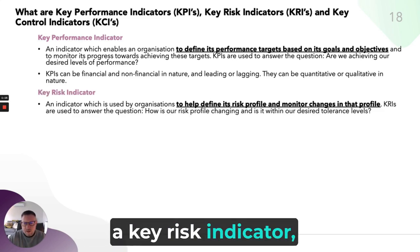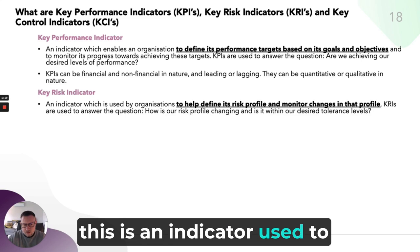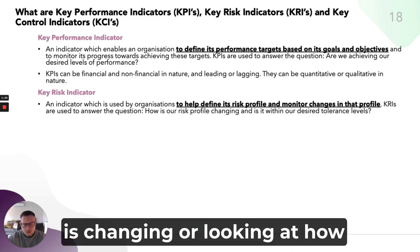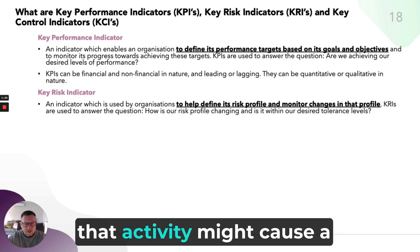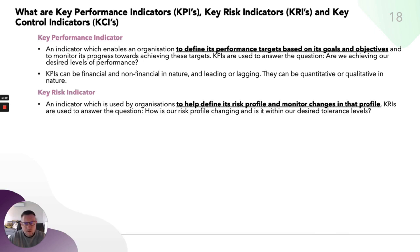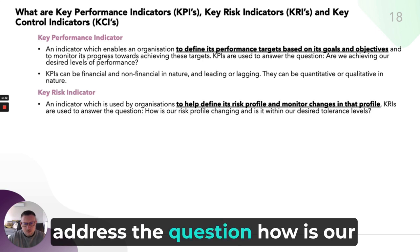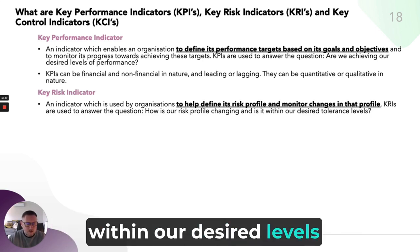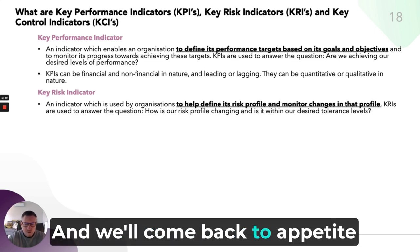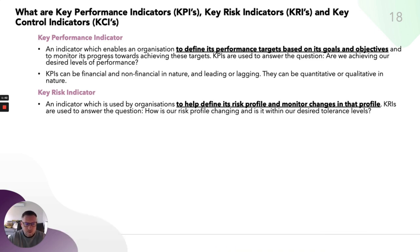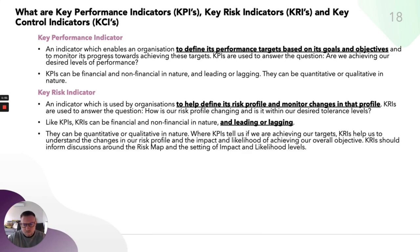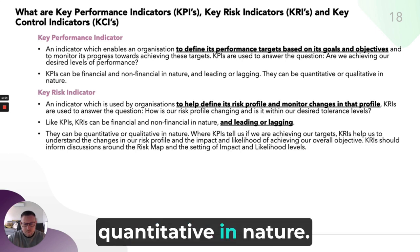The Key Risk Indicator is an indicator used to define whether an organisation's risk profile is changing, or to look at how that activity might cause a change in risk profile. KRIs are typically used to address the question: how is our risk profile changing and is it within our desired levels of tolerance? Like KPIs, they can be financial and non-financial, leading or lagging, and qualitative or quantitative in nature.